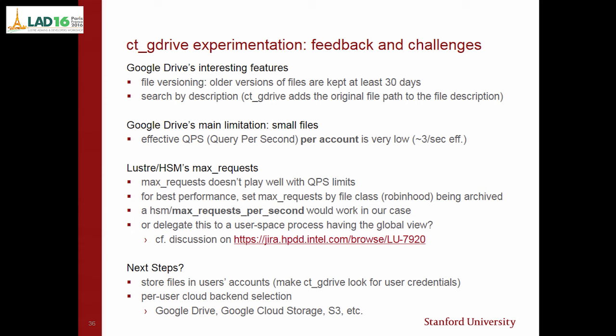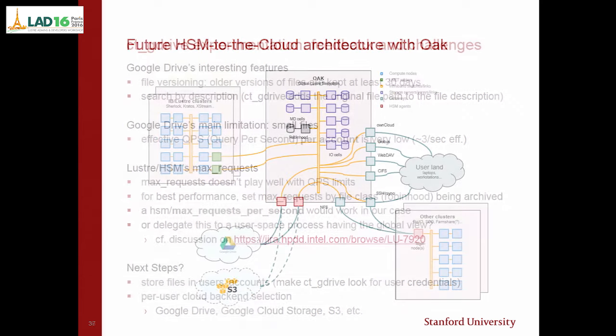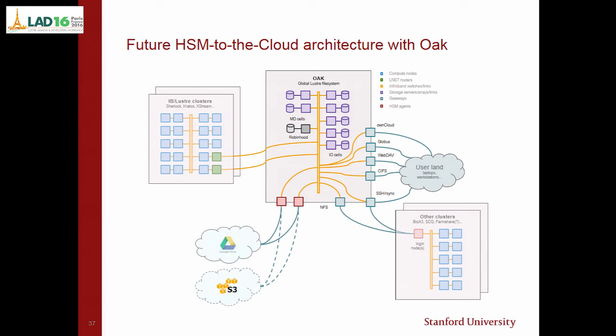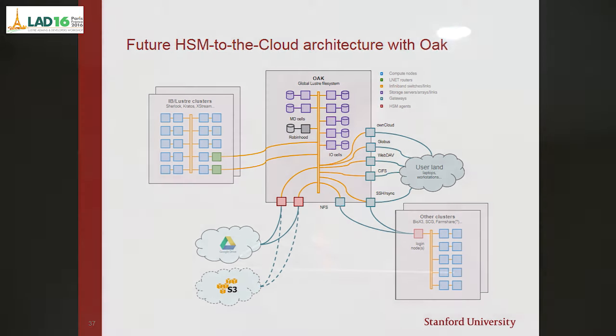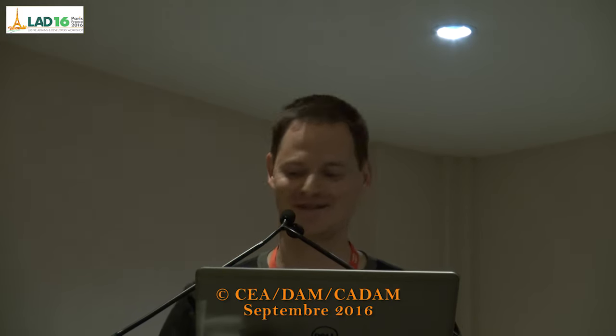The next step for us is to store files in user accounts to get rid of this limitation — there is a special directory in the Google Drive API to store hidden files in each user account. We also want to play with other cloud storage, since some PIs and faculty members have credits in Amazon S3, which could be interesting. That's the future architecture of Oak with HSM to the cloud, with additional VMs on gateways that migrate data as HSM agents. If you have questions, I will be happy to answer them during the break. Thank you very much for your attention.